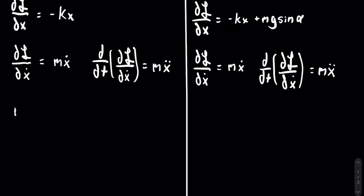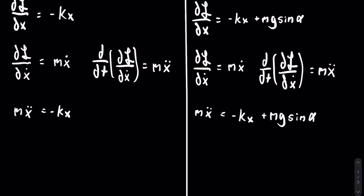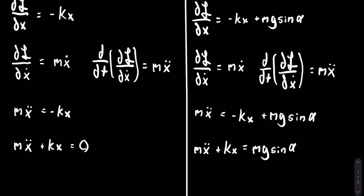We can now plug it into our main equation and get that x-double-dot is equal to negative k x over m for the first system. For the second mass-spring system we get that x-double-dot is equal to negative k x over m plus g sine of alpha. These are both differential equations and will typically be written as shown on the screen.